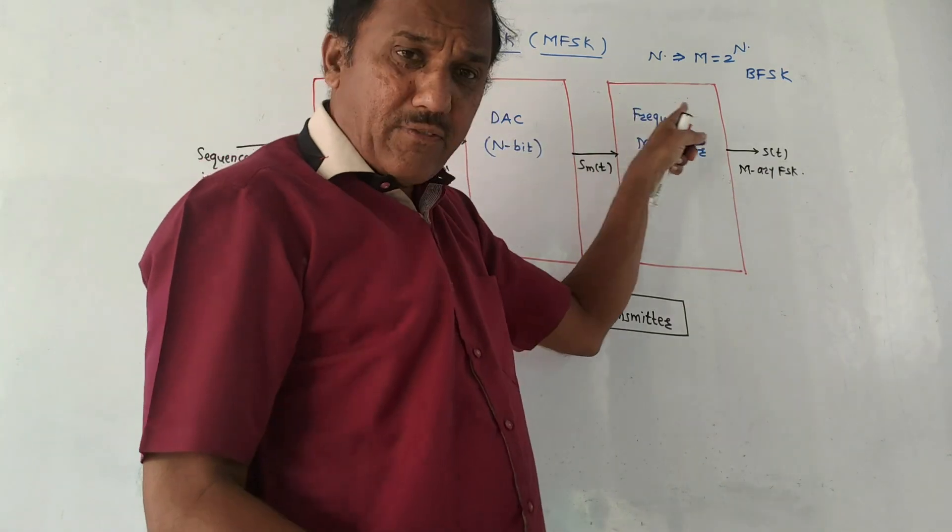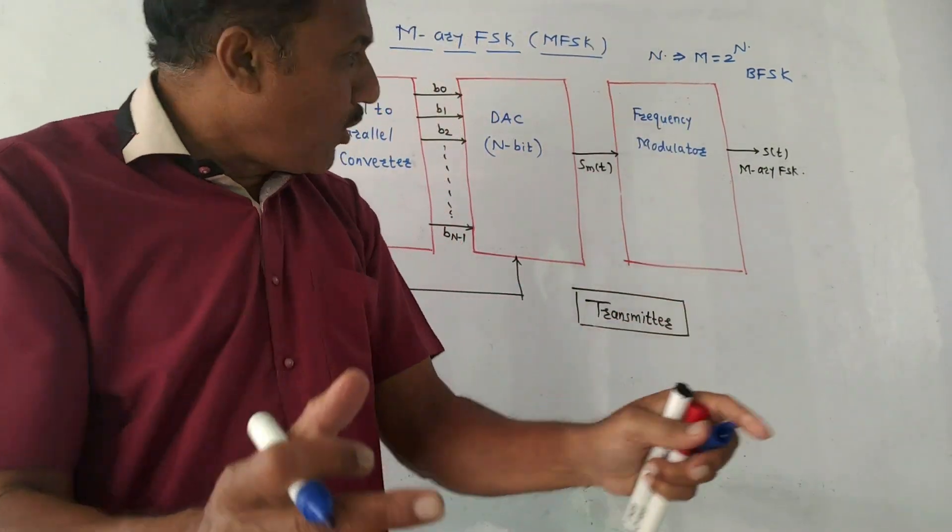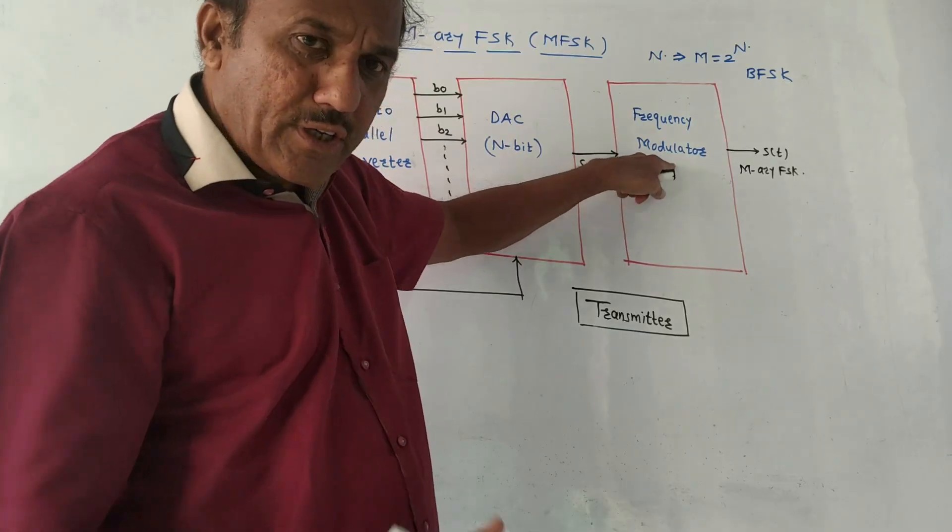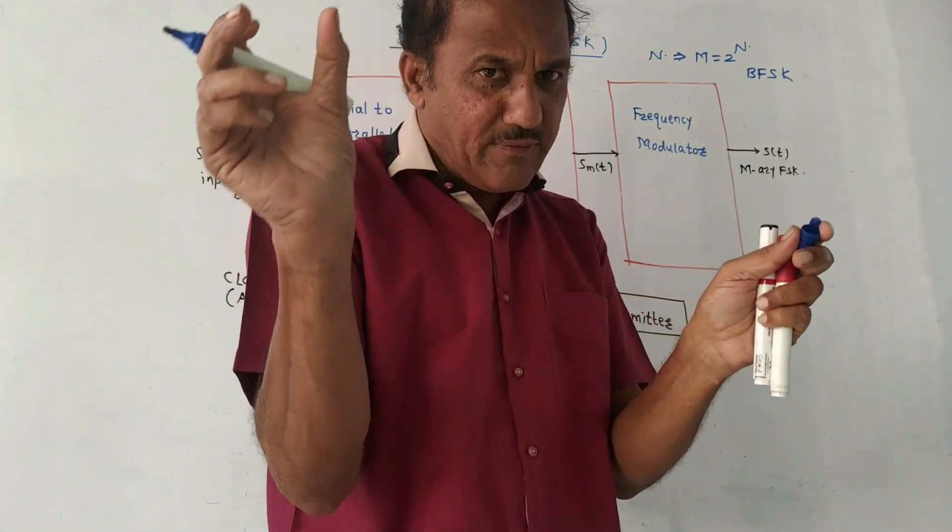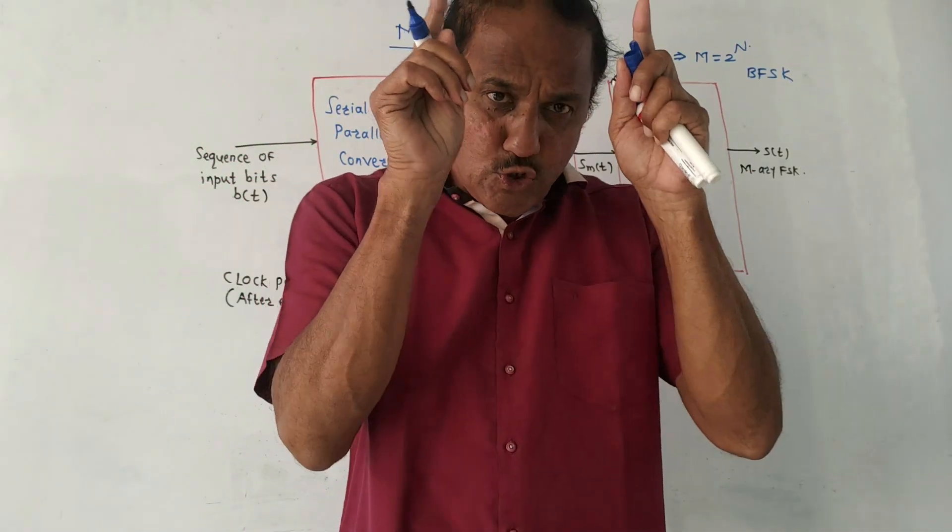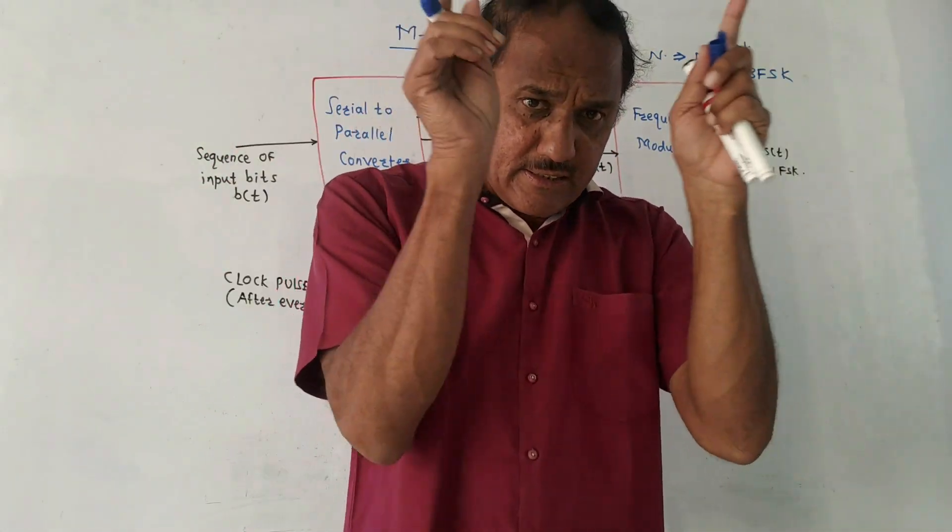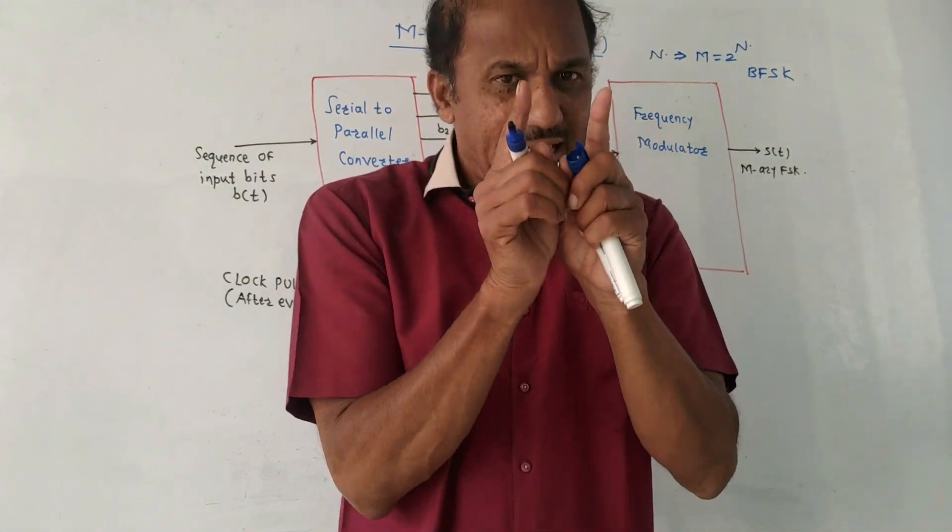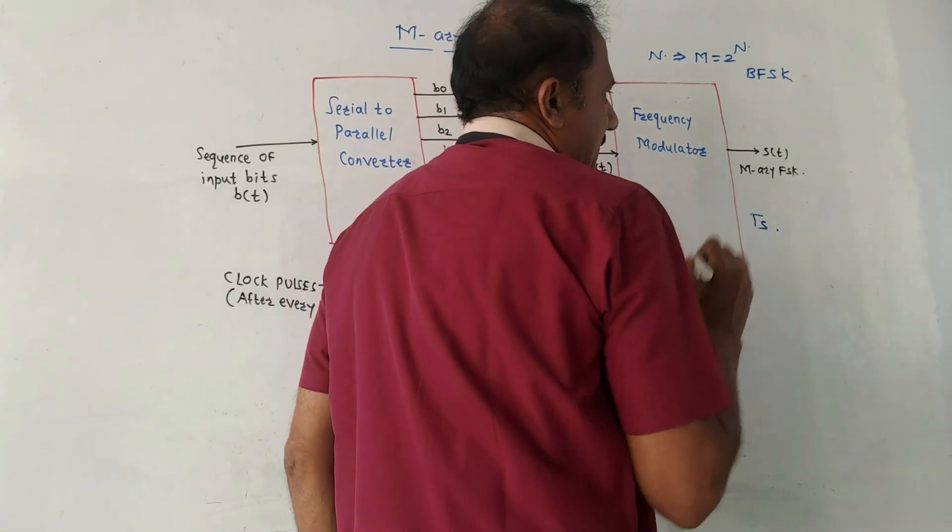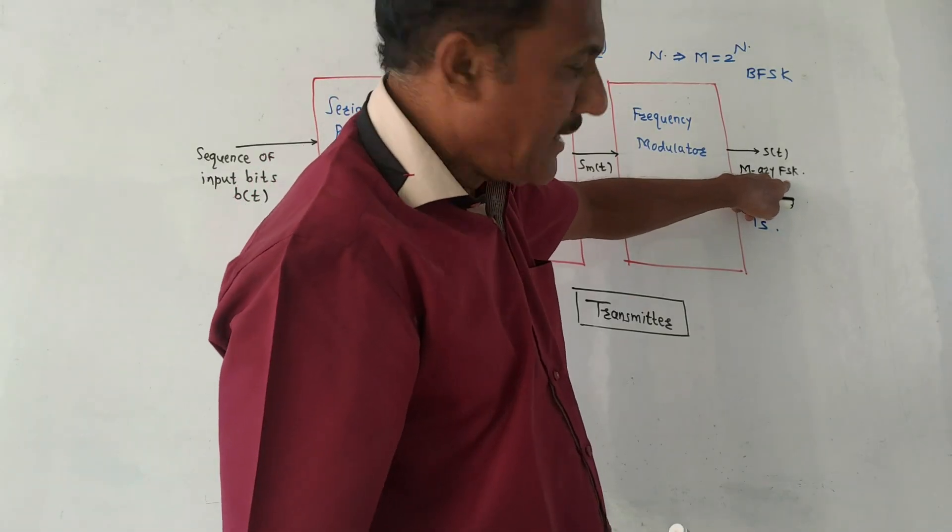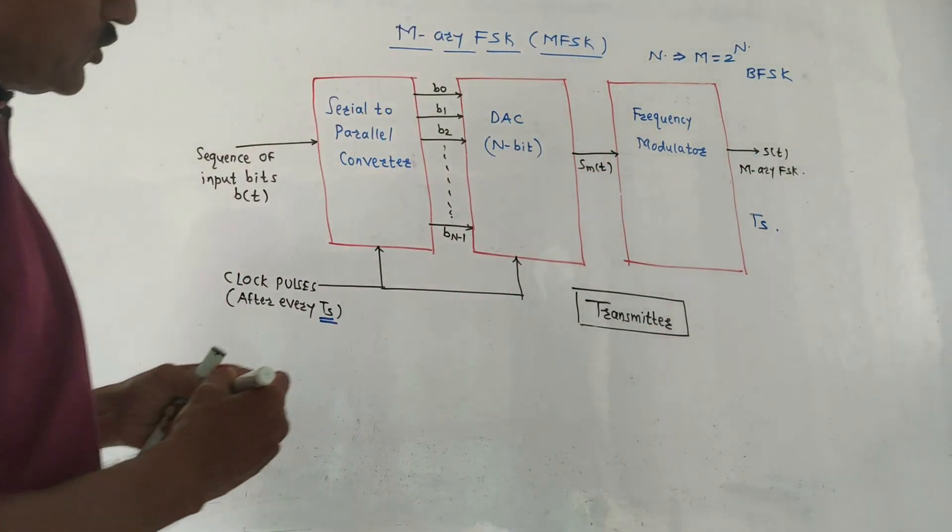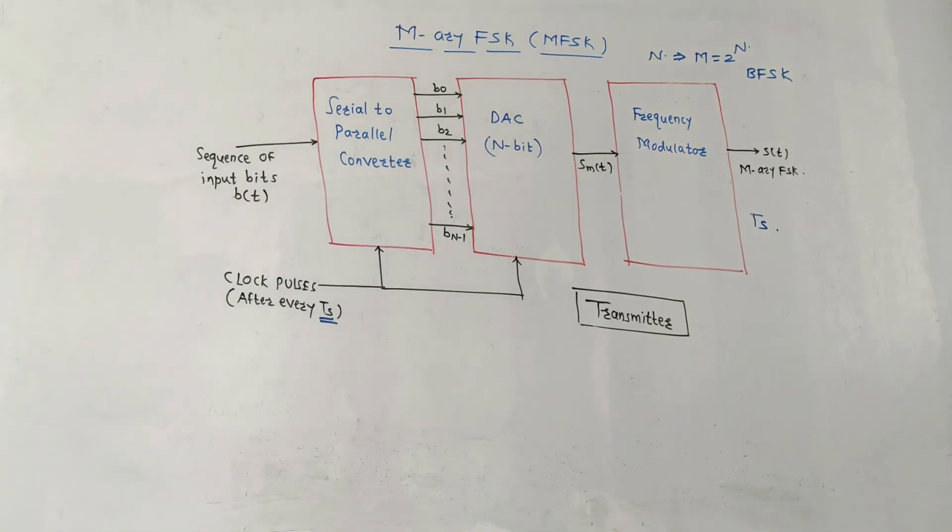The last block is the frequency modulator. Depending on the symbol, the function of this block is to generate a particular frequency for each symbol. The generated frequency will be existing for symbol duration TS. The output of this M-ary FSK is denoted by SO of t. This is the simple diagram of the transmitter section of M-ary FSK.